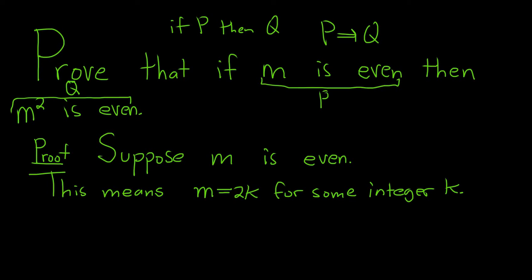So now we've used our hypothesis. We've used P. We assumed P was true. We wrote down what it meant. And so now the only thing left to do is to look at M squared.